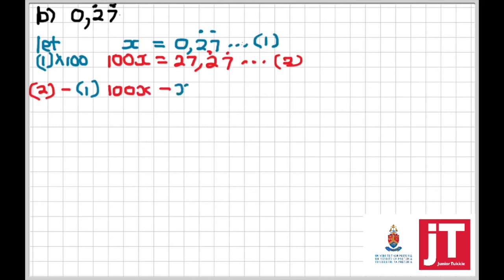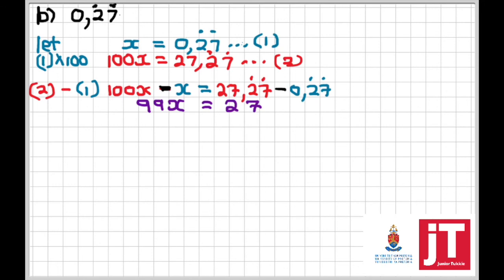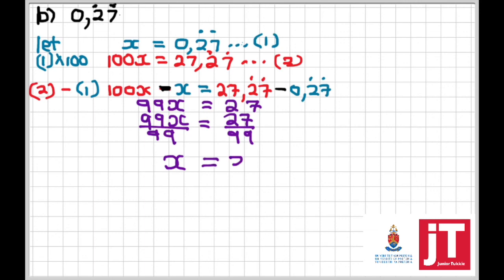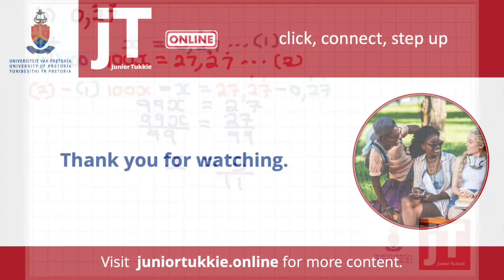We do equation 2 minus equation 1: 100x − x = 27.27̄ − 0.27̄, simplifying to 99x = 27. Dividing both sides by 99: 99x/99 = 27/99, giving x = 3/11. You can verify by pressing 3 ÷ 11 on your calculator and the SD button to confirm you get 0.272727. I hope you enjoyed watching — look out for the next video, bye-bye.